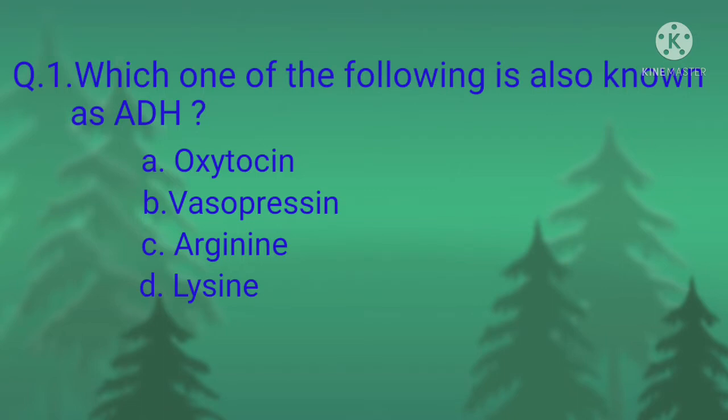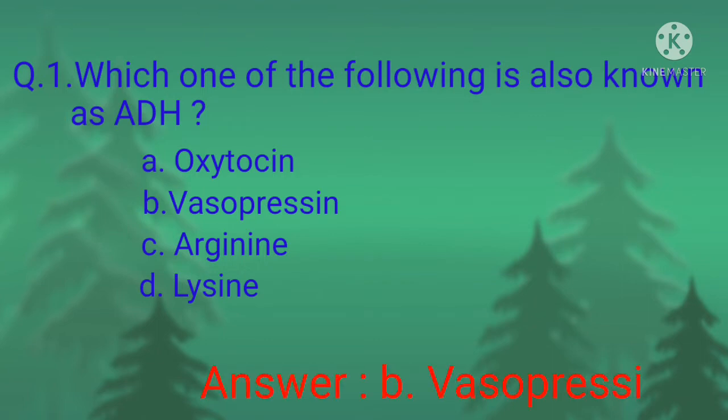Options are: option A, oxytocin; option B, vasopressin; option C, arginine; option D, lysine. The correct option is option B, vasopressin.